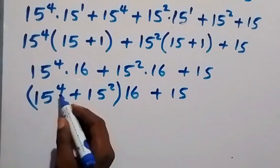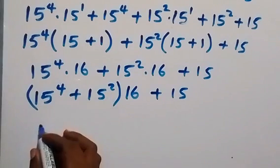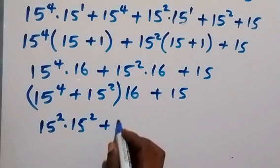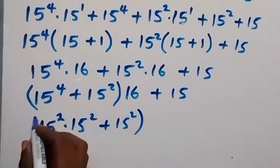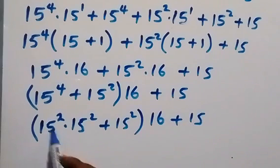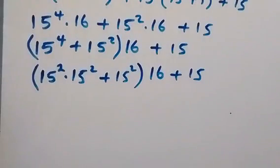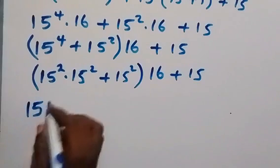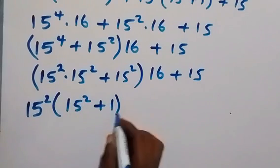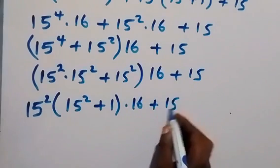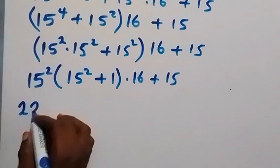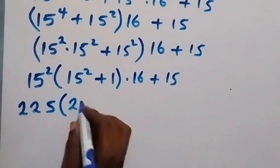In the next step, let's rewrite 15 to the power 4 as 15 squared times 15 squared from the law of indices, then plus 15 squared, times 16, plus 15. From here, 15 raised to power 2 is common — when we bring that out, we get 15 squared times the quantity 15 squared plus 1, times 16, plus 15.